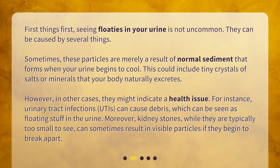What can floating particles in urine indicate? First things first — seeing floaties in your urine is not uncommon. They can be caused by several things. Sometimes these particles are merely a result of normal sediment that forms when your urine begins to cool. This could include tiny crystals of salts or minerals that your body naturally excretes.